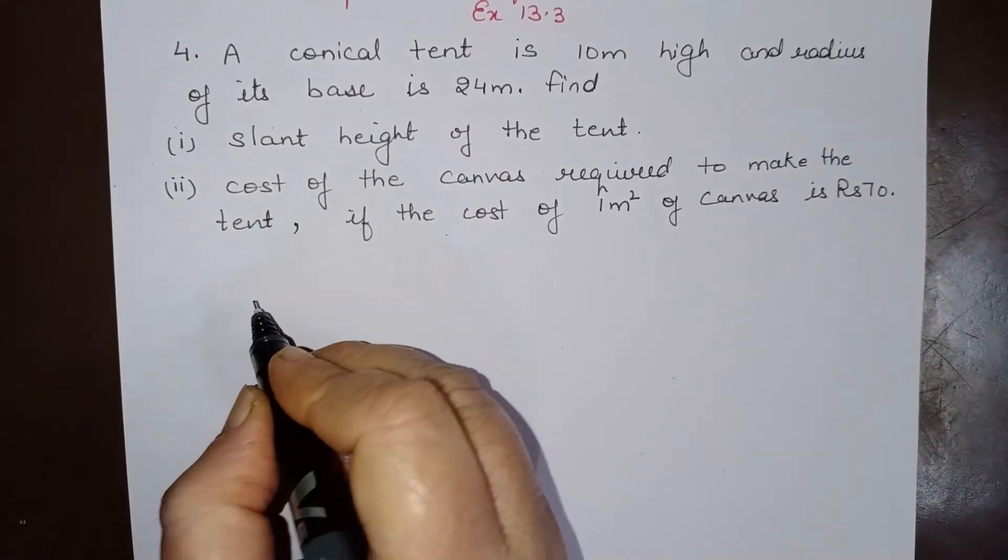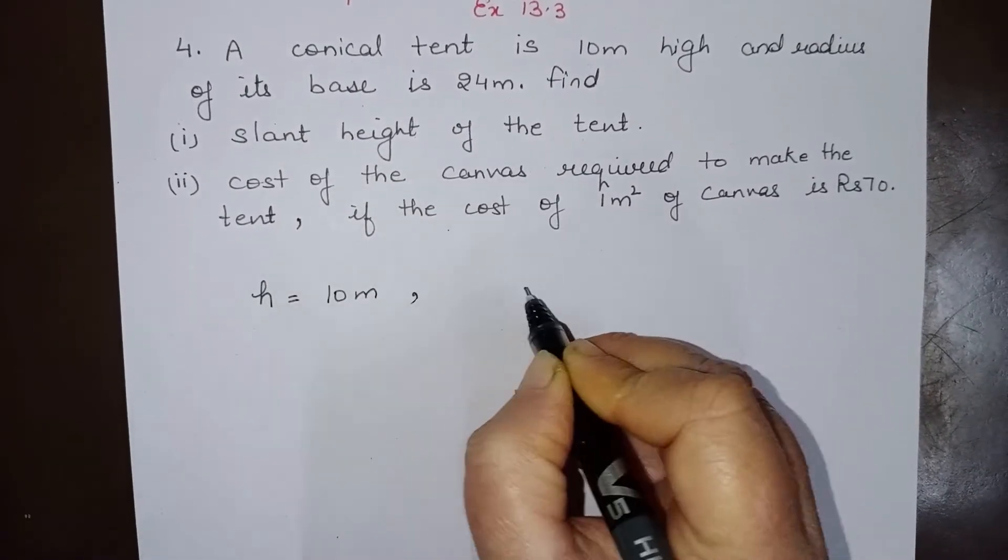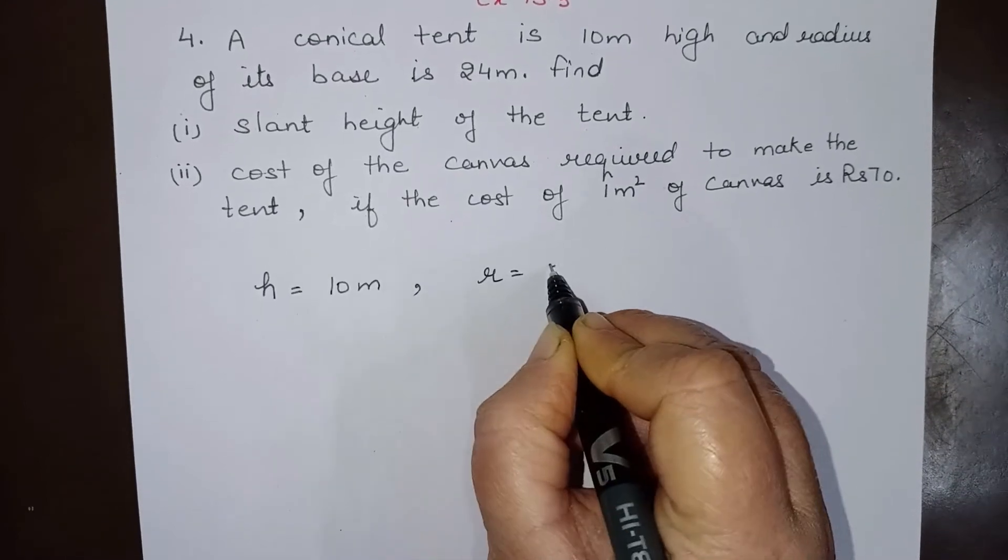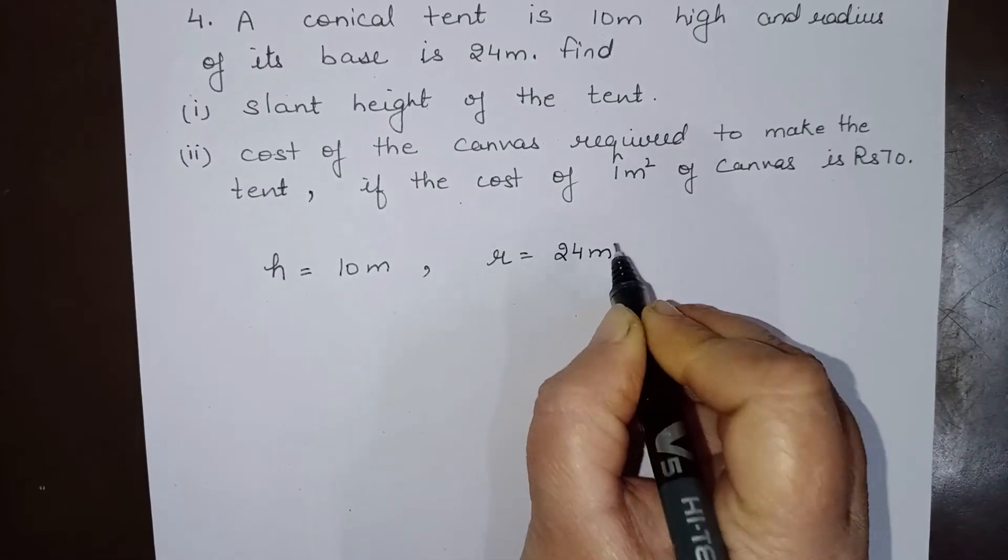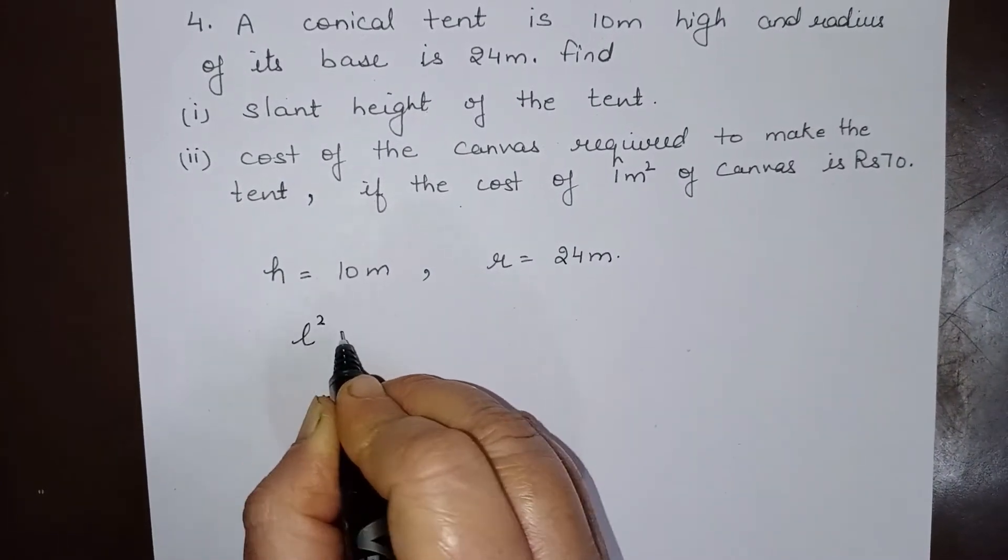Now let us see what is given. Height h is given to be 10 meter and radius of base is given to be 24 meter. We have to find the slant height. Now this slant height is l square